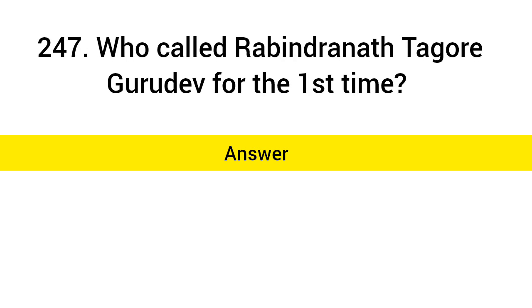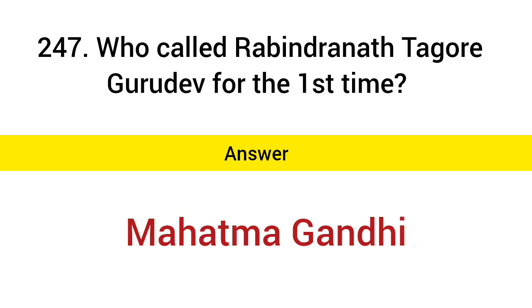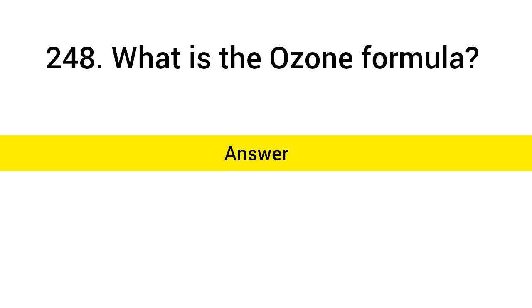Who called Rabindranath Tagore 'Gurudev' for the first time? Answer: Mahatma Gandhi. What is the Ozone formula? Answer: O3.